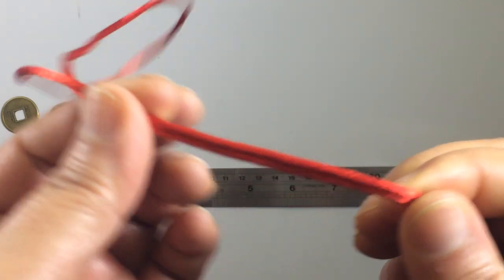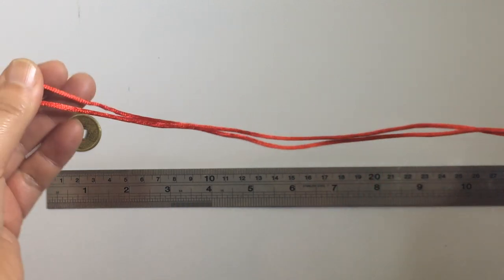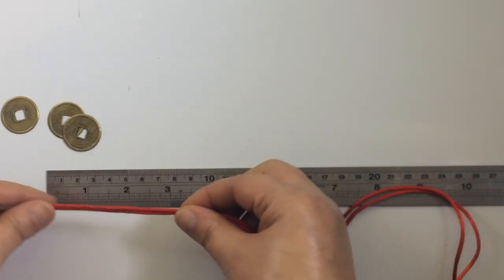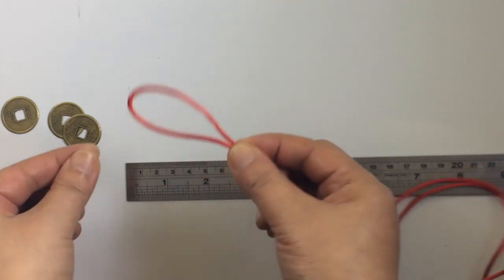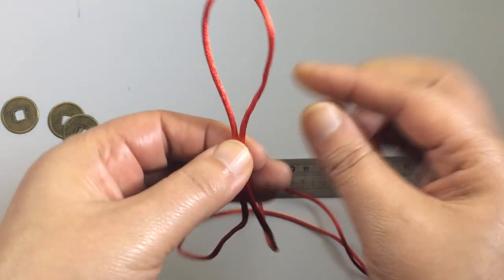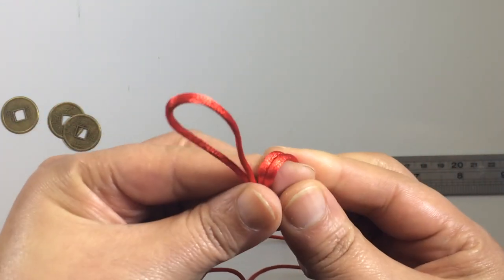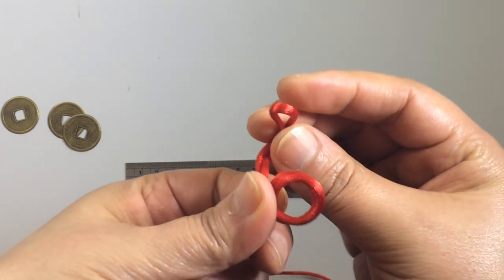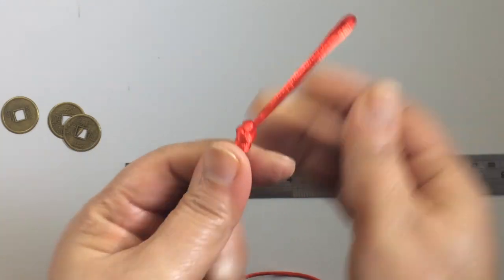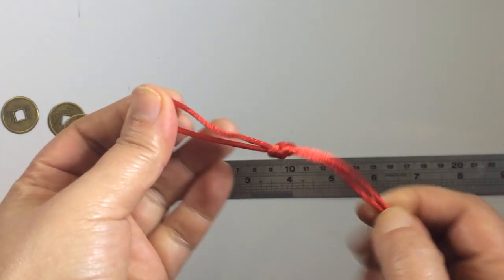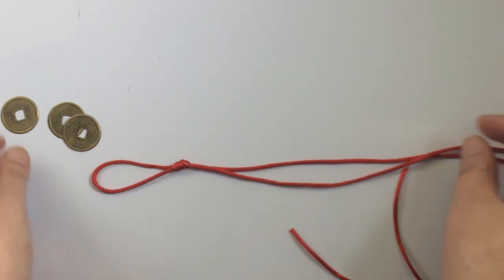Okay, let's start to make it. It is very easy. You just measure around about six centimeters, then tie the knot. Tie this knot very easy like that.